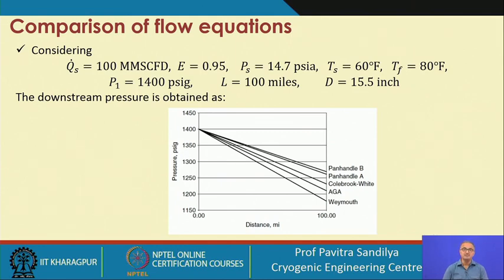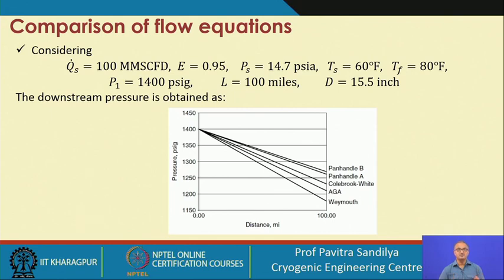This means Weymouth gives the maximum pressure drop and Panhandle B gives the minimum pressure drop. If we use the Weymouth equation, we need a compressor capable of handling very high pressure drops — so Weymouth gives a conservative estimate of pressure drop, requiring a higher capacity compressor with a higher pressure ratio.